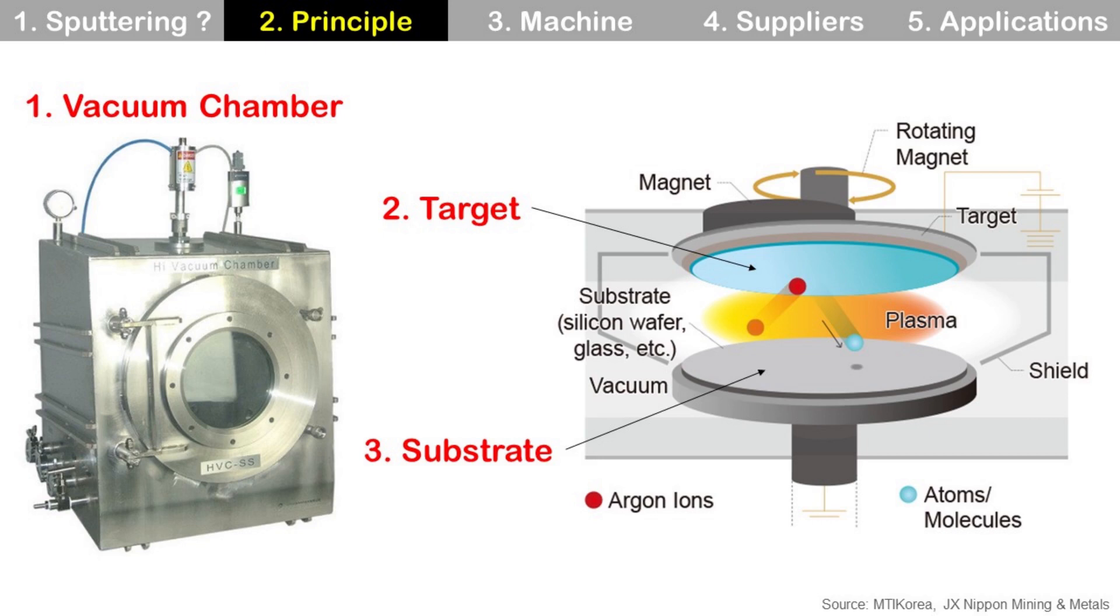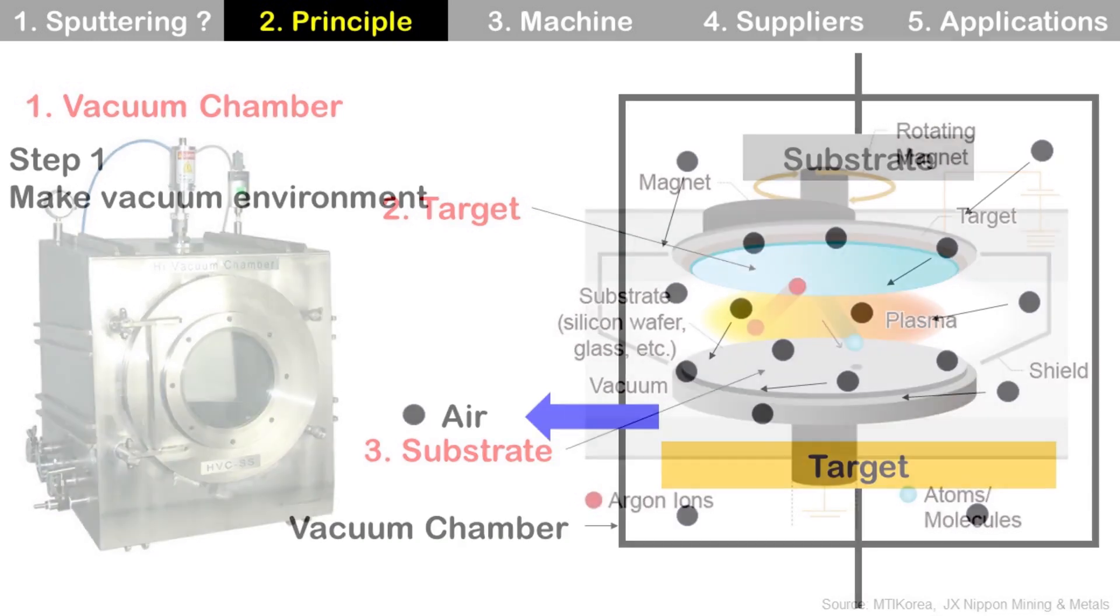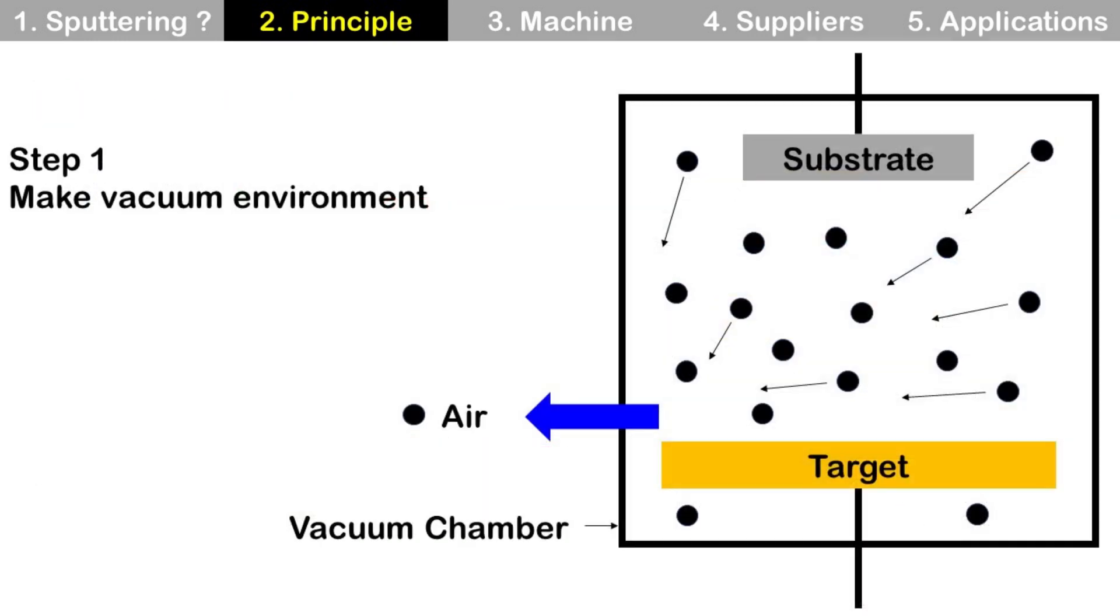Key components of sputtering are the vacuum chamber, target, and substrate. Step 1: Make a vacuum environment. Remove air from the vacuum chamber using a vacuum pump.